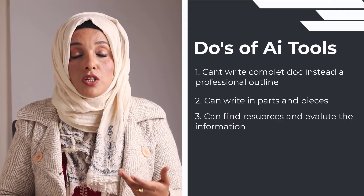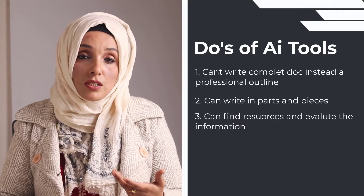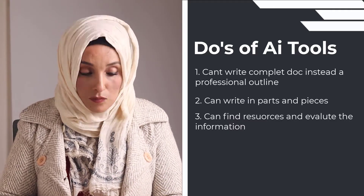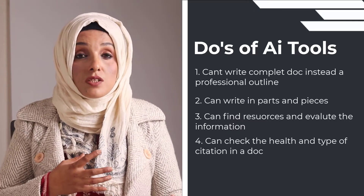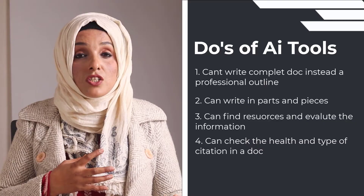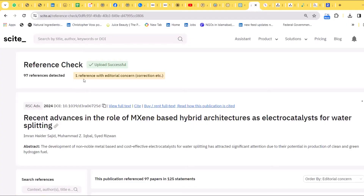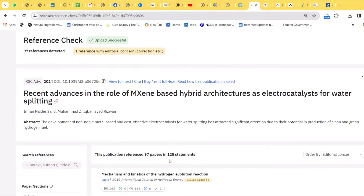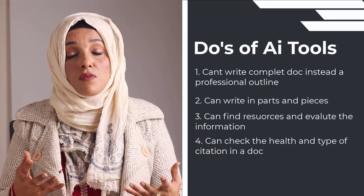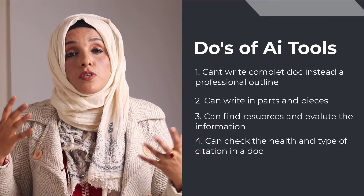You can check supporting citations and contrasting citations in a single document about any argument you want to prove in your research document, and Cite AI is going to help you in this regard.